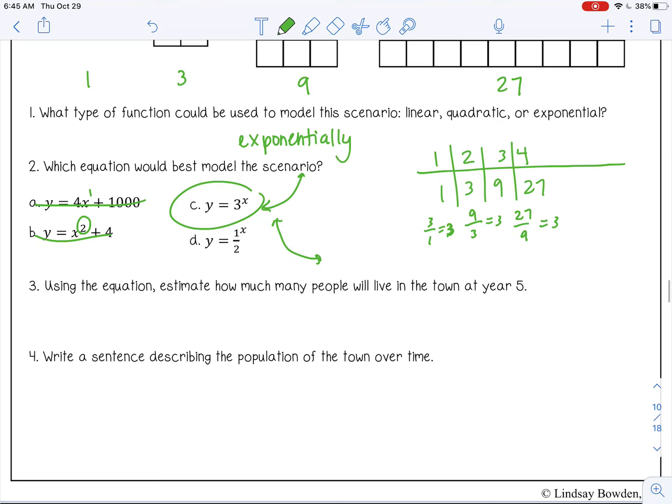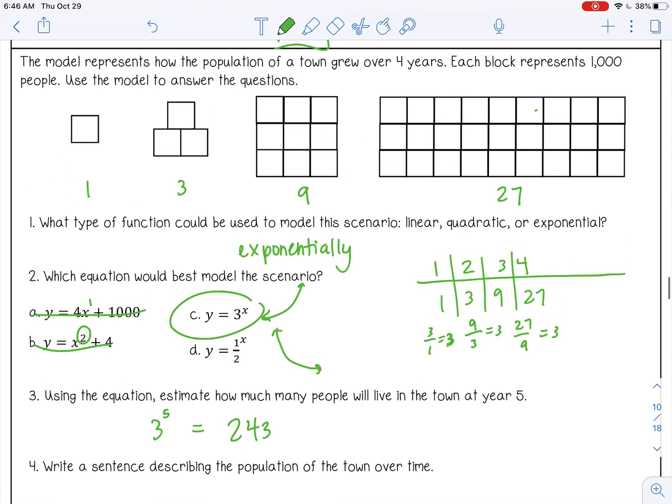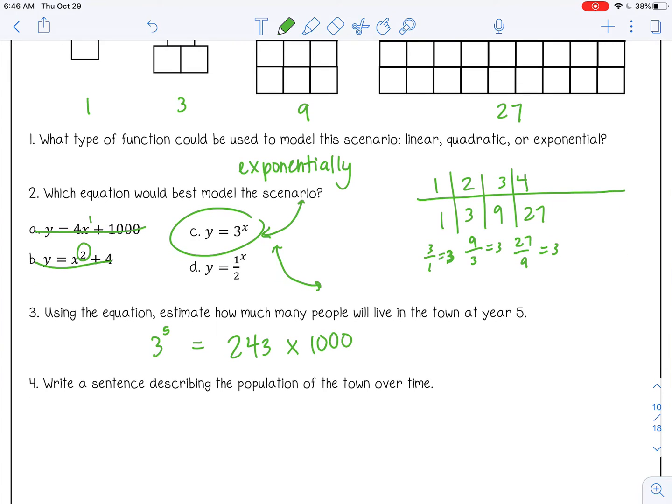And then using the equation, estimate how many people will live in the town at year 5. So 3 to the 5th power. And I'm just using my calculator for this. 3 carat key 5. You get 243. But if you go back and read the question, it says each block represents 1000 people. So I need to multiply that by 1000. So I get 243,000 people.